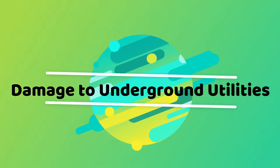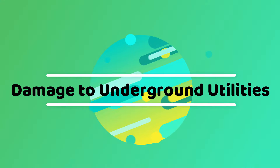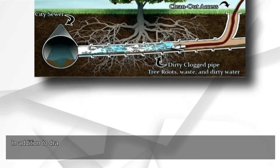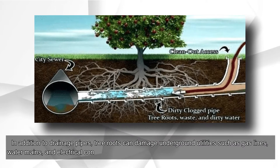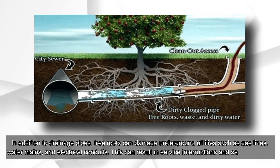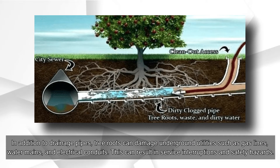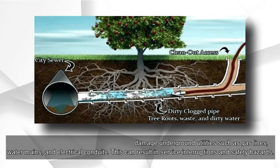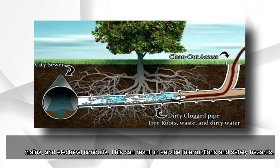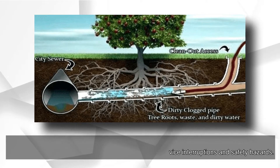Damage to underground utilities. In addition to drainage pipes, tree roots can damage underground utilities such as gas lines, water mains, and electrical conduits. This can result in service interruptions and safety hazards.